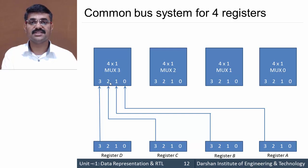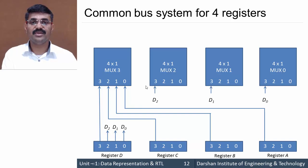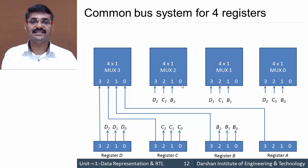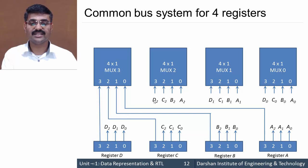Similarly, all remaining bits are connected to the remaining multiplexers. The remaining bits from Register D — that is bits 0, 1, 2 — are connected to the other multiplexers at input line 3. Line 2 of all remaining multiplexers is connected with Register C, line 1 with Register B, and line 0 with Register A. To avoid making the circuit wiring complex, we denote these connections using symbols.